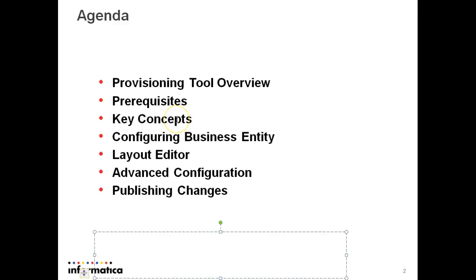Next are the key concepts for the provisioning tool: business entities, reference entities, and root nodes. Business entities are significant to the organization — an organization can have business entities of type employee, customer, supplier, etc. Reference entities are business entities that are associated with the lookup base object. The root node is the uppermost node of the business entity model and represents the business.